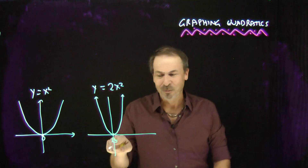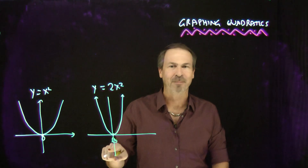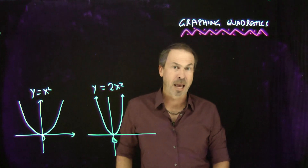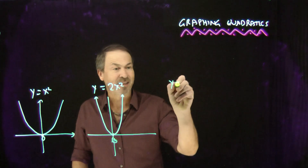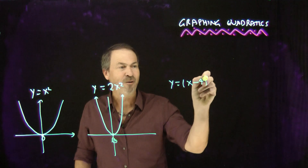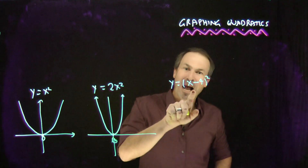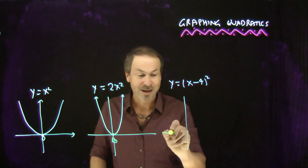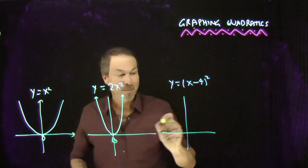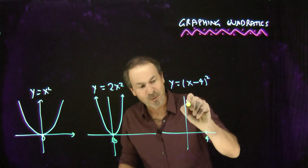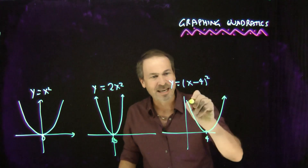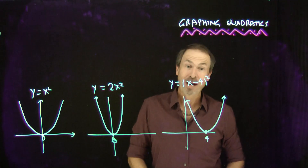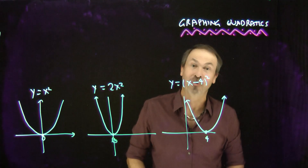Then we started playing with changing where all the action is happening. Instead of having all the action at x equals 0, maybe we have all the action happen at x equals 4. So we started graphing things like y equals x minus 4 squared — making the number 4 behave like 0. The graph would be the same shape, but now all the action is happening at x equals 4. It's still another symmetrical U-shaped graph, just put over there.